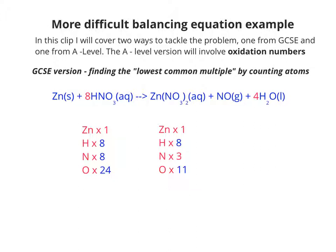So if we do a count of oxygen on the right-hand side, that now means we've got 11.